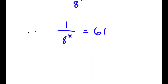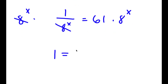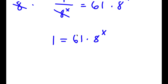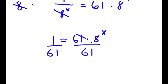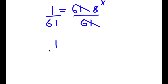Now I'm going to multiply both sides by 8 to the power of x, so these two cancel out, and now I have 1 is equal to 61 times 8 to the power of x. Now I'm going to divide both sides by 61, so these two cancel out, and now I have 1 over 61 is equal to 8 to the power of x.